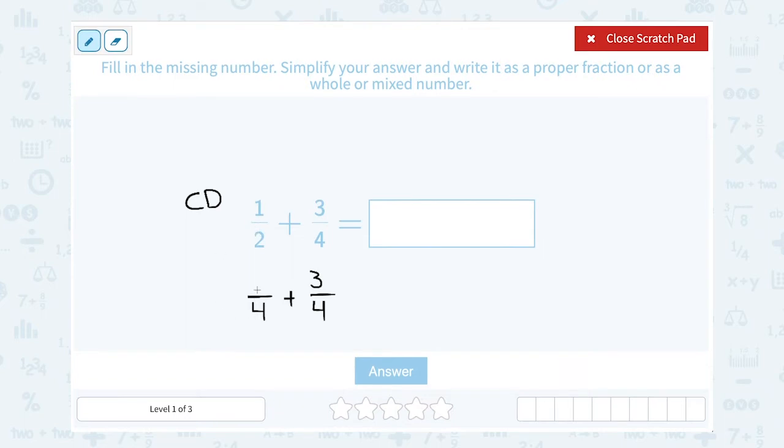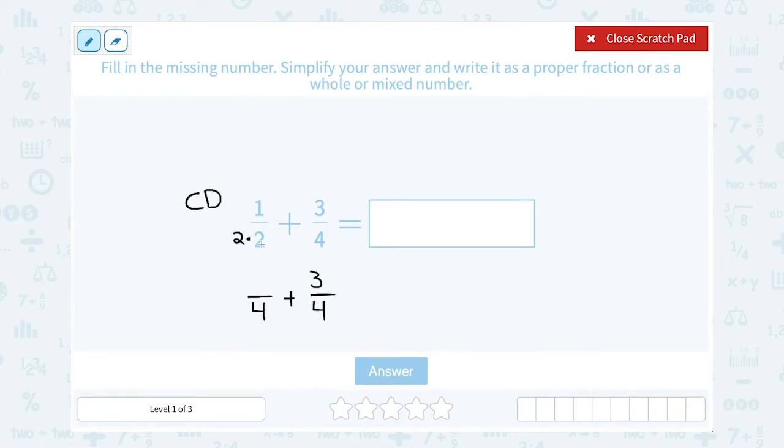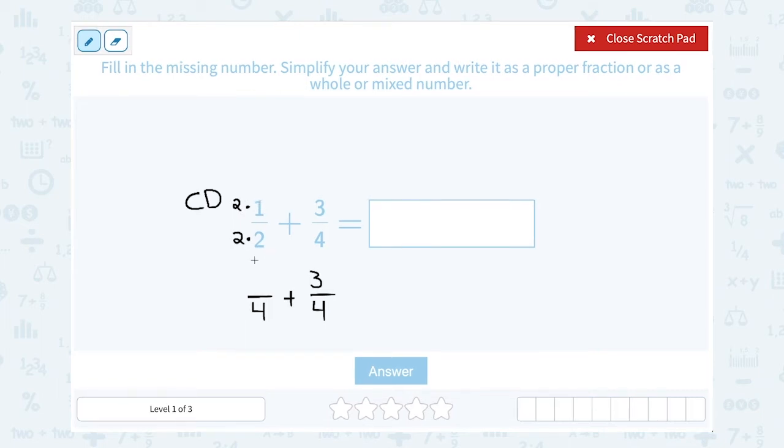But to get from two to four, I would have to multiply by two. Two times two would give me four. So the rule is whatever you did in the bottom, you have to do the same thing on the top. So if I multiplied by two on the bottom, I'm also going to say times two on the top, and two times one gives me two.